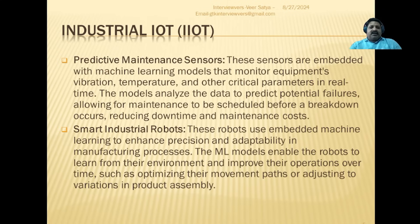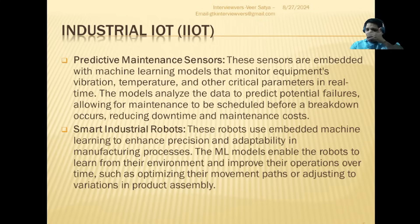The next is industrial IoT, where you have predictive maintenance sensors. The maintenance rate of machines can be predicted based on the models embedded in your products, improving the precision and adaptability rate of the manufacturing process.